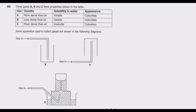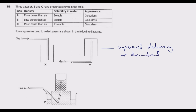This apparatus is used to collect gases that are less dense than air, and this method is known as the upward delivery method or downward displacement method. Then this other apparatus is known as the downward delivery or upward displacement method.